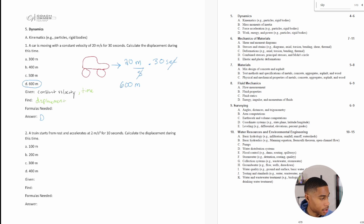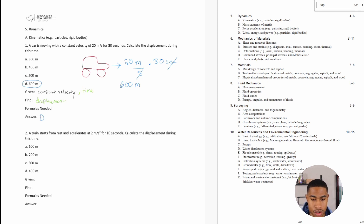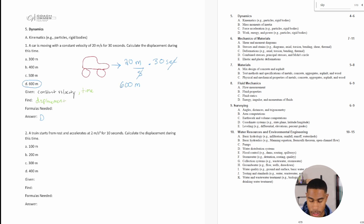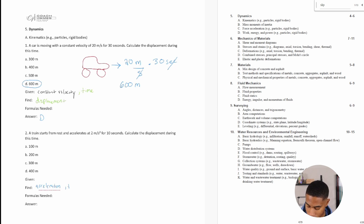Number two says: a train starts from rest and accelerates at 2 meters per second squared for 10 seconds — calculate the displacement during this time. This is a little different. The information we're given is: acceleration equals 2 meters per second squared, and time equals 10 seconds.